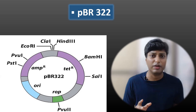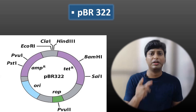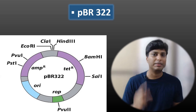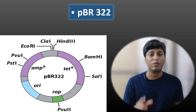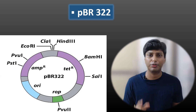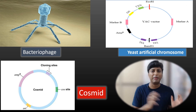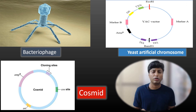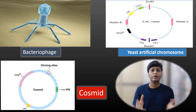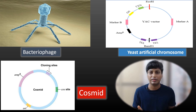This particular plasmid PBR322 has different features, and I will make a separate video to help you understand the different features of PBR322. Like plasmids, in today's date and time there are different types of cloning vectors which are also used to transfer the desired gene into the host and form many many copies of that particular desired gene.